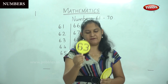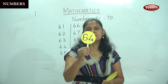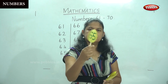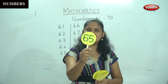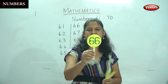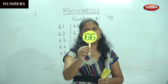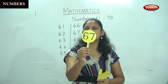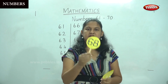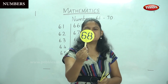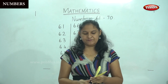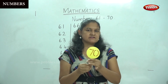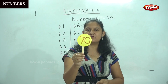6 and 3, 63. 6 and 4, 64. 6 and 5, 65. 6 and 6, 66. 6 and 7, 67. 6 and 8, 68. 6 and 9, 69. And the last number is 7 and 0, 70.